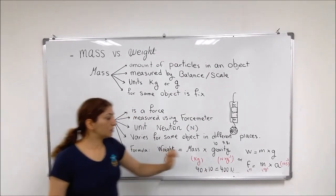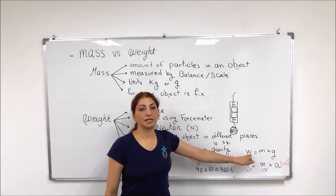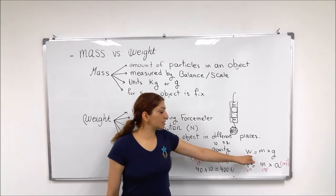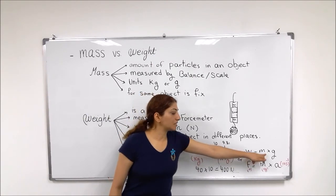So if I want to write the formula, of course, I can show by the symbols. It means that weight equals to mass times gravity.